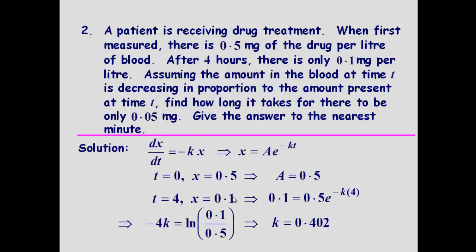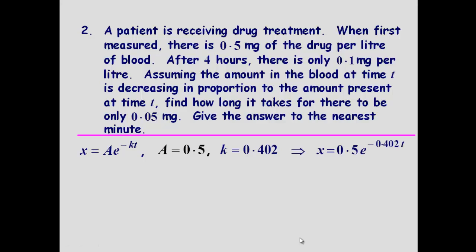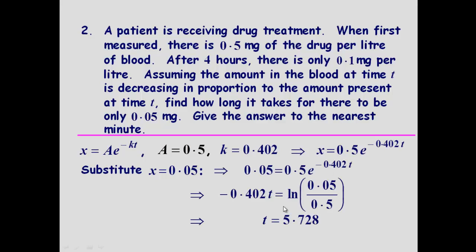Find out how long it takes for there to be only 0.05 milligrams. So we need to find out what the time will be when x is 0.05. So the only unknown now will be the t. So put everything else into the equation. The only unknown is t.